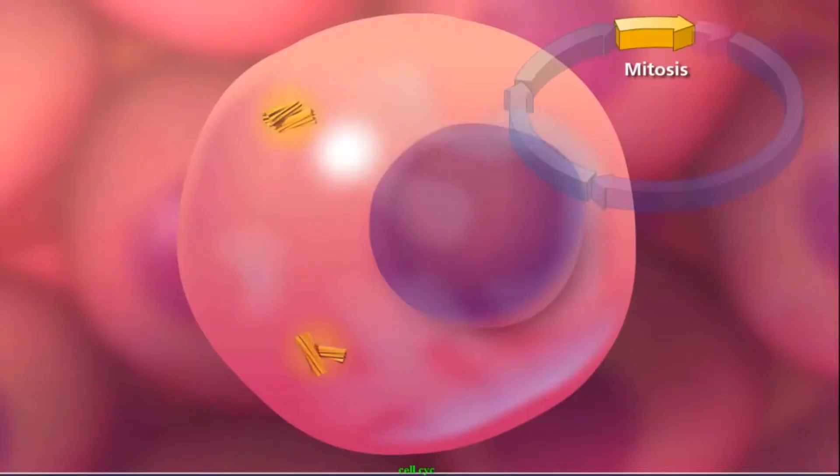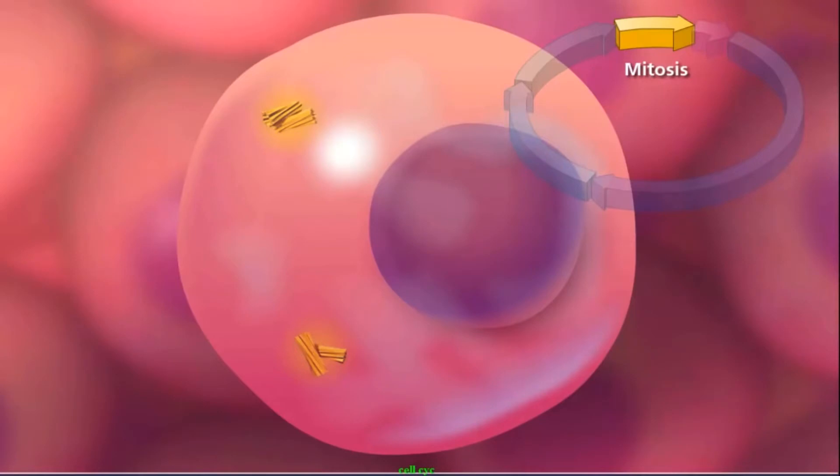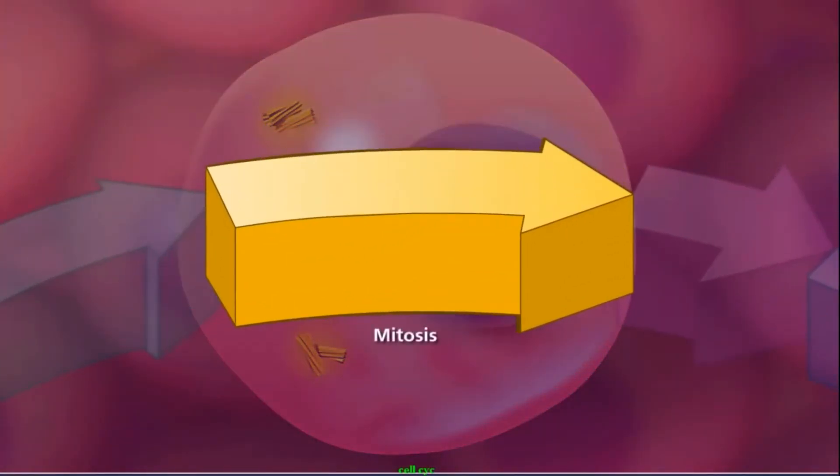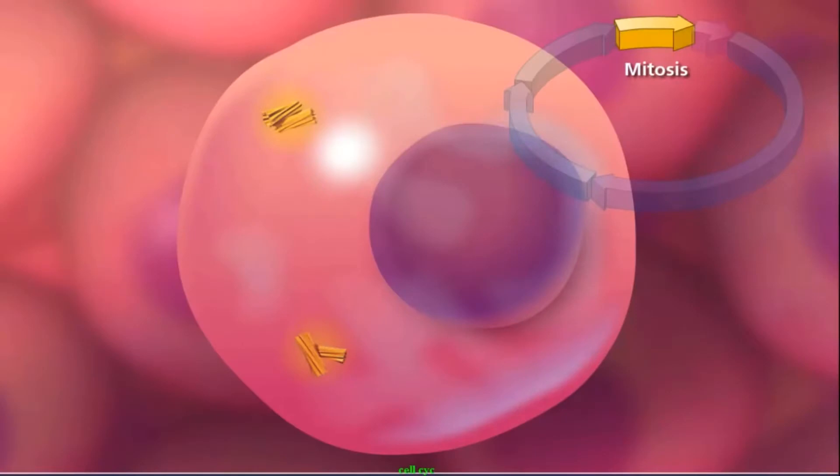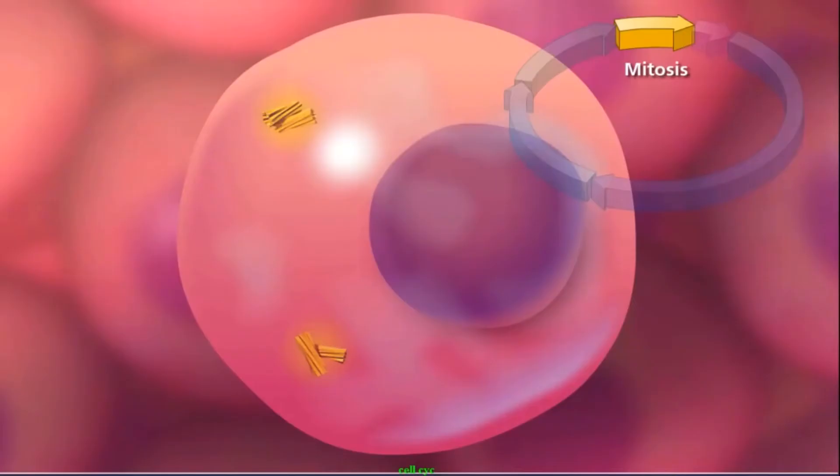Now let's get into mitosis. Mitosis is the division of the nucleus into two daughter nuclei that are genetically identical to one another and to their parent nucleus.